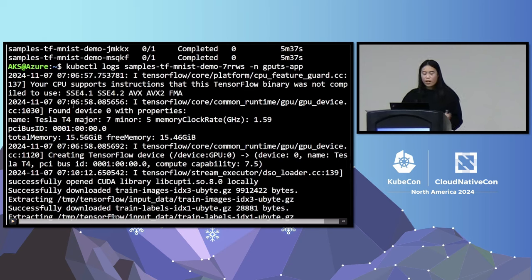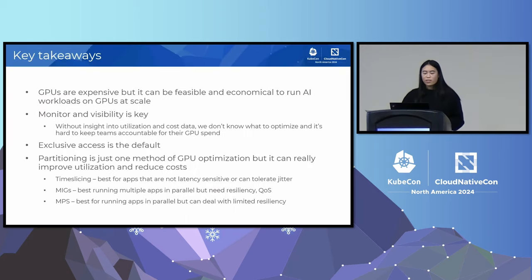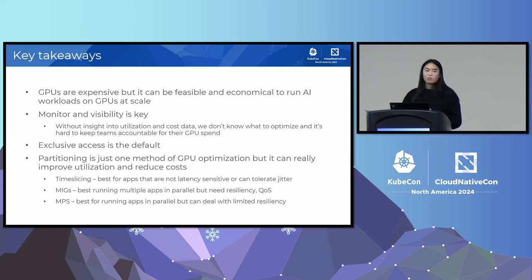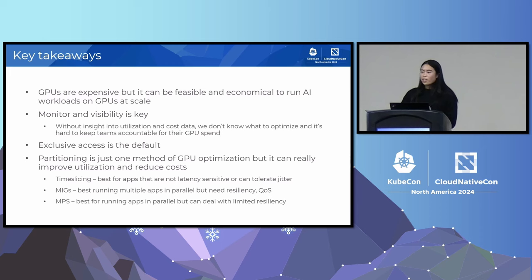Just wanted to show how quick and easy it is to get up and running with time slicing. Some key takeaways: GPUs are expensive, but they can be feasible and economical to run if you implement these techniques. Monitoring and visibility is key — without utilization metrics or cost metrics, we don't know what is being underutilized, where to focus our efforts, or how to keep teams accountable for their GPU spend. Exclusive access for a GPU is the default, so implementing partitioning is one method to help optimize GPUs and really improve utilization and reduce costs.